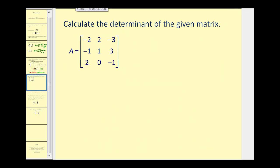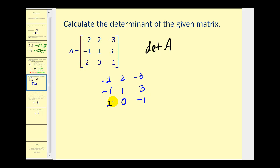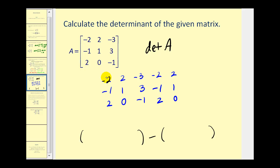Let's find the determinant of matrix A. We'll copy the first three columns, then copy the first two columns again: negative two, negative one, two, and then two, one, zero. We'll have the sum of three products minus the sum of three products. The first three products start at the top and move to the right. We have negative one times one times negative one, that's positive two, plus two times three times two, that's twelve, plus negative three times negative one times zero, which is zero.